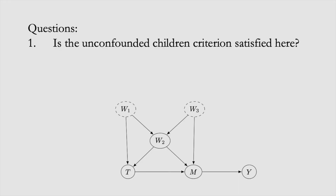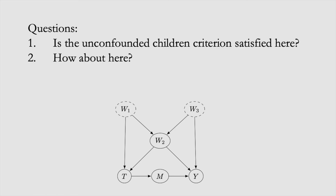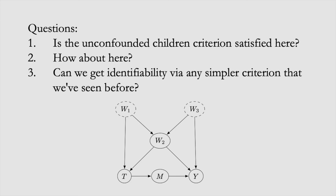We'll conclude this section with a question. Consider this graph - is the unconfounded children criterion satisfied here? If the graph is changed to a modified version, is the unconfounded children criterion satisfied in that graph? And in that modified graph, can we get identifiability via any simpler criterion that we've seen before this section?